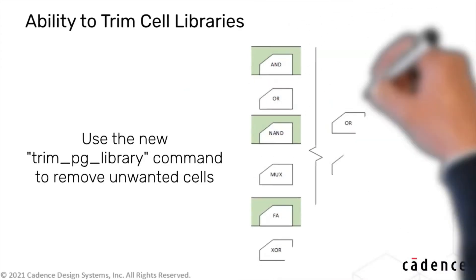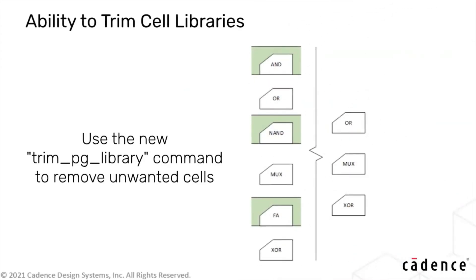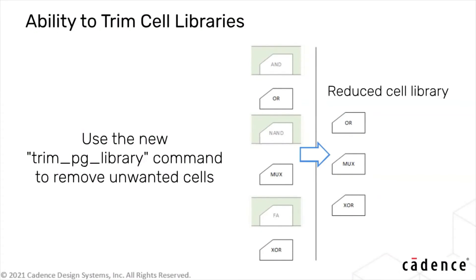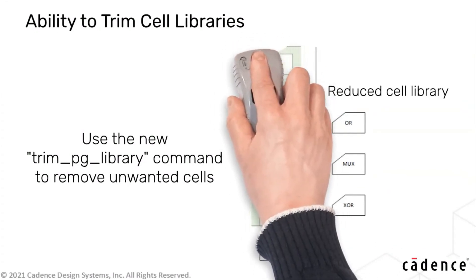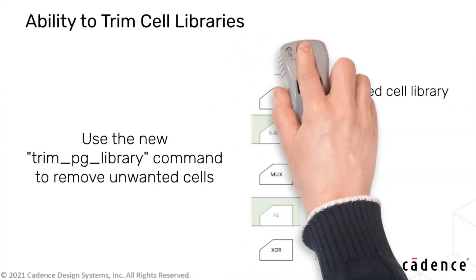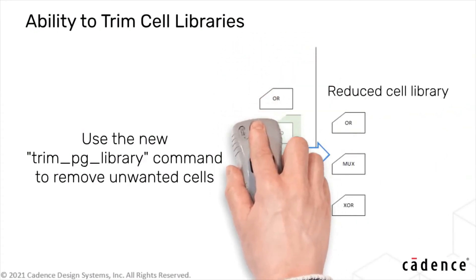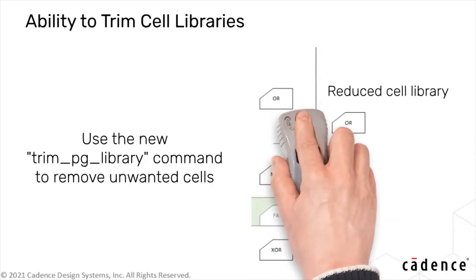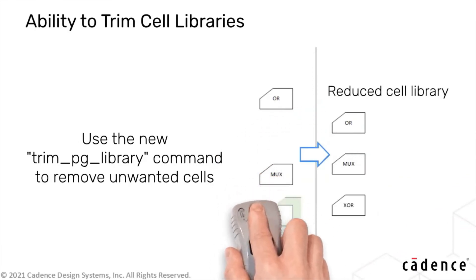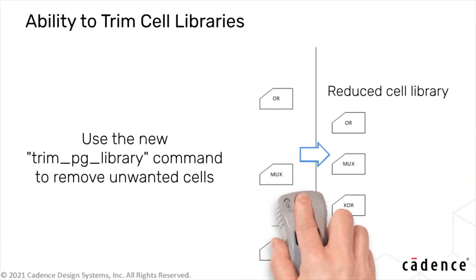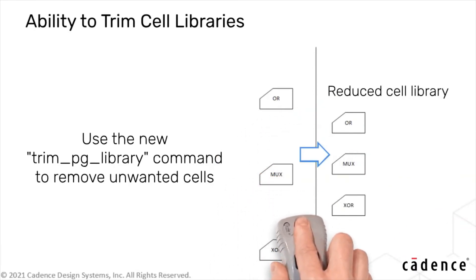Now, with the new TrimPg library command, you can remove a cell or list of cells from a cell library. This command allows you to trim the size of a cell library by removing unwanted cells, which can reduce the overall time required for extraction.